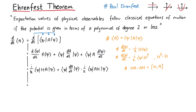Finally, our time derivative of the expectation value of A is given by i over h-bar times the expectation value of the commutator of the Hamiltonian with A, plus the expectation value of the time derivative of A.